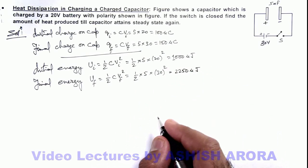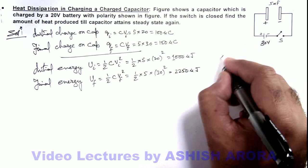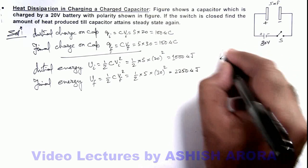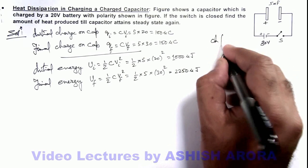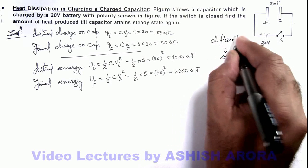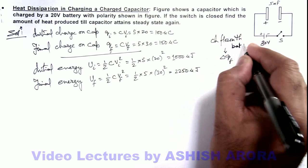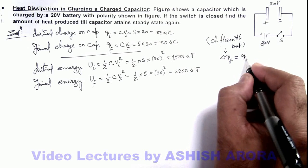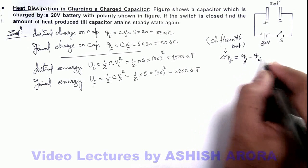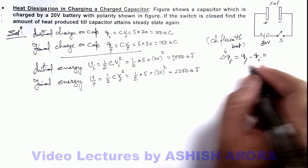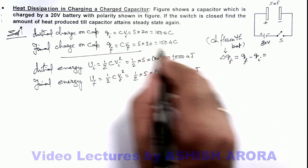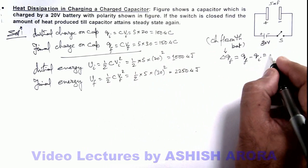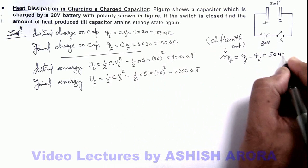So in this situation here we can calculate ΔQ_f, that is charge flown through battery during switching. This can be directly given by Q_f minus Q_i. The value is Q_f is 150 microcoulomb, Q_i is 100 microcoulomb, so this will be 50 microcoulomb.